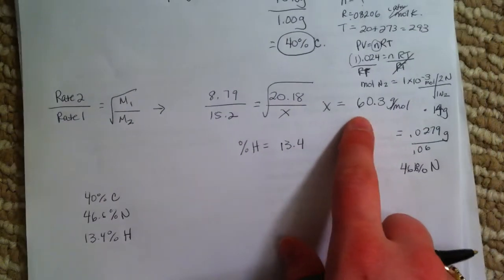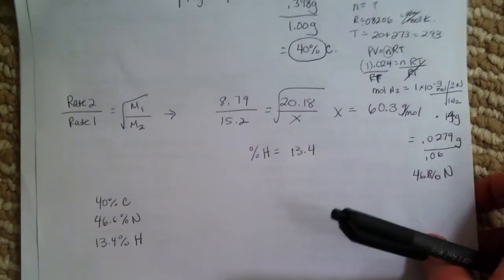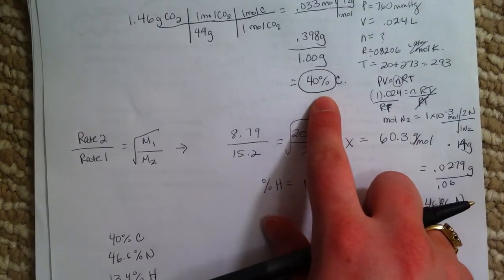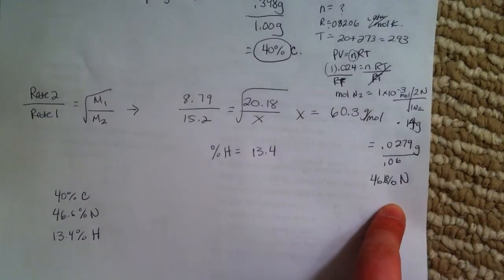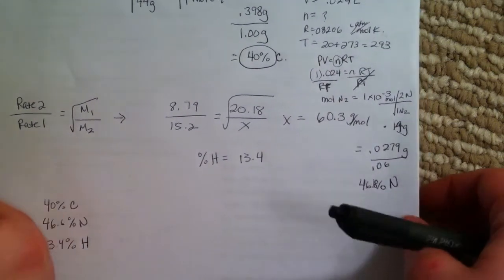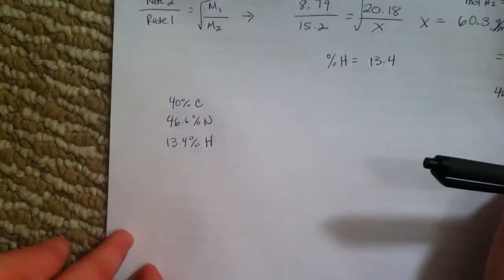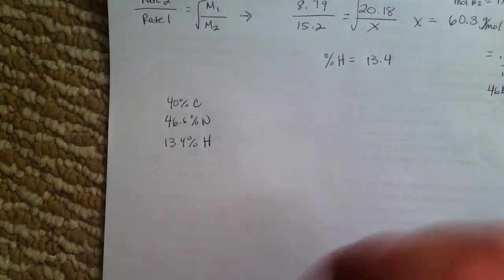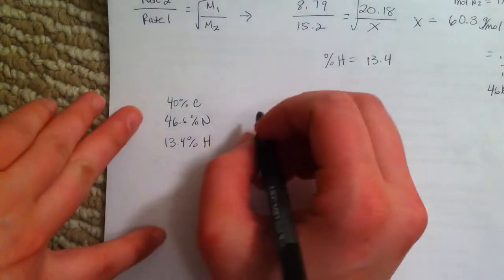In the last video, we found the molar mass to be 60.3 and the percent carbon to be 40% and the percent nitrogen to be 46.6% by their masses. Now we need to take those percents and find the empirical formula.